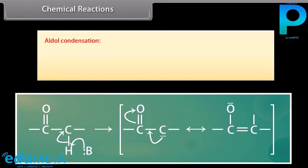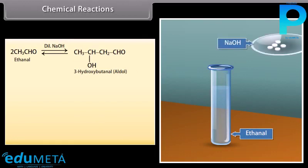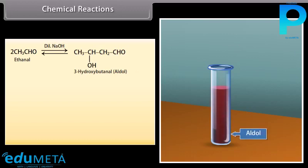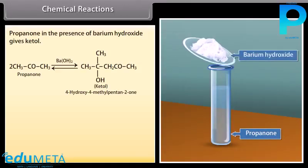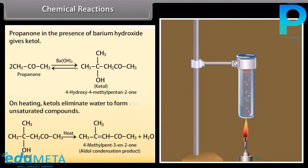Aldol condensation: it is the dimerization of an aldehyde or ketone having at least one alpha hydrogen in the presence of dilute alkali such as dilute sodium hydroxide, sodium carbonate, etc., to form a hydroxy aldehyde or ketone called aldol. Ethanal in the presence of dilute sodium hydroxide undergoes condensation to form a syrupy liquid known as aldol. On heating, aldols eliminate water to form unsaturated compounds. Propanone in the presence of barium hydroxide gives ketol; on heating, ketols also eliminate water to form unsaturated compounds.